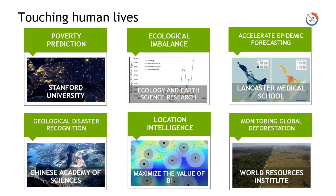Spread of epidemics is another application — diseases like cholera and malaria, predicting in what direction and at what rate they are expected to spread, and hence enabling preventive action. Geological disaster recognition is similar — there are indicators of an impending disaster. How do you pick up those indicators from satellite imagery using machines rather than manual viewing, which is complex and error prone? Deep learning enables 24/7 monitoring to make these predictions more accurate.